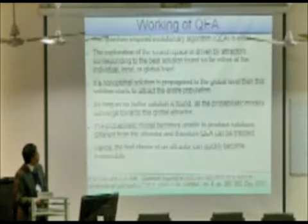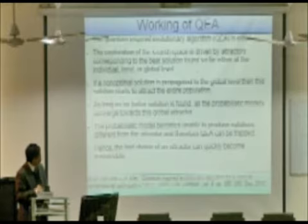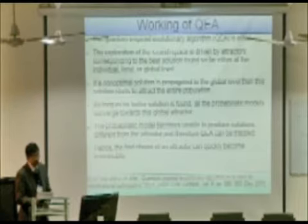So this is how a QEA works. The exploration of the search space is driven by attractors corresponding to the best solution that you found so far, either at the individual, local, or at the global level. If a non-optimal solution is propagated to global level, then this solution starts to attract the entire population. So all probabilistic models will converge towards this global attractor. And the probabilistic model becomes unable to produce solutions different from the attractor. Therefore, bad choice of an attractor can quickly become irreversible. So we have to be careful about that in our implementation.